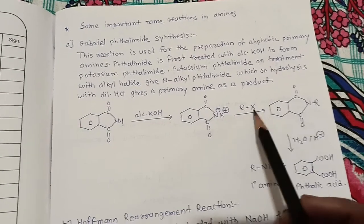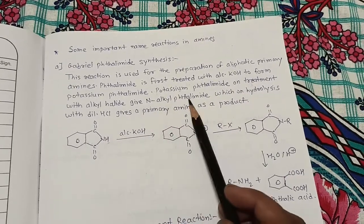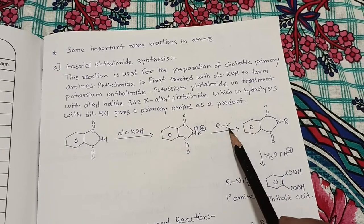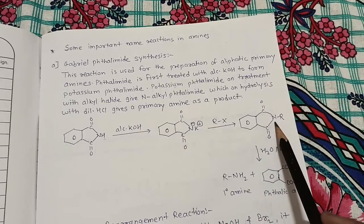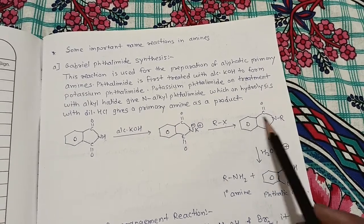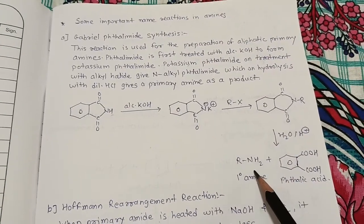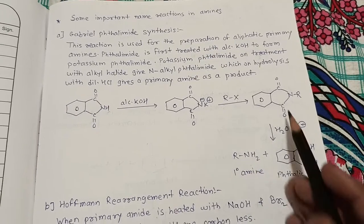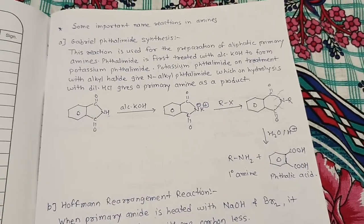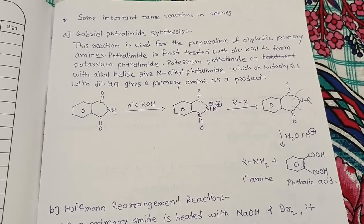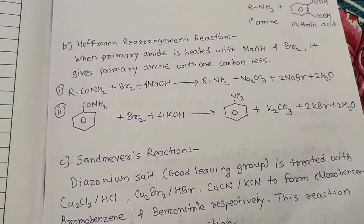Then this potassium phthalimide, on treatment with alkyl halide (RX), gives N-alkyl phthalimide. X goes with K⁺ and R attaches, giving N-alkyl phthalimide. When this N-alkyl phthalimide is hydrolyzed, the bonds are broken down and ultimately primary amine and phthalic acid are obtained. That's Gabriel phthalimide synthesis.